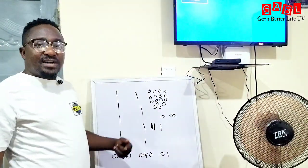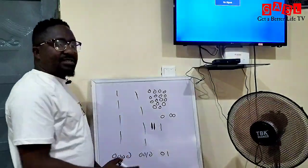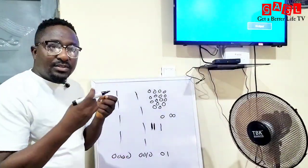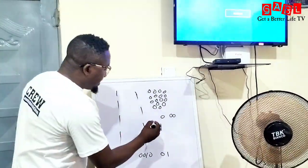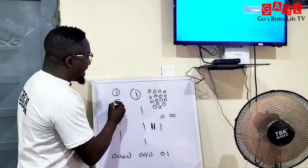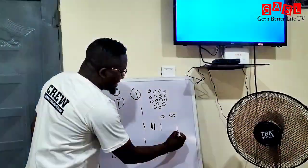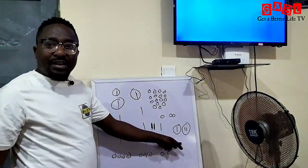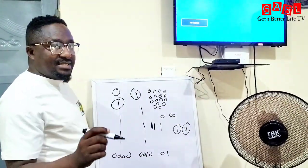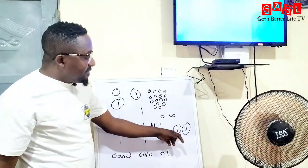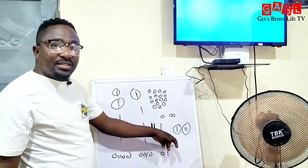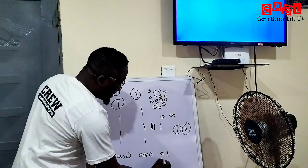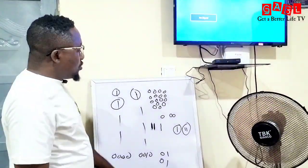If we want to convert our Ifa signs — I call them signs, or we can say symbols — because these are not numbers, they are symbols, they are signs. Ifa is either this sign or this sign. In binary code they are called digits, but in Ifa our babalawos do not call them digits. The binary system calls them digits: either zero or one.